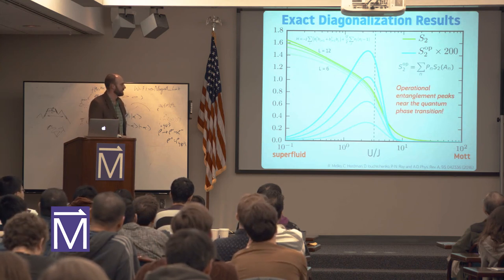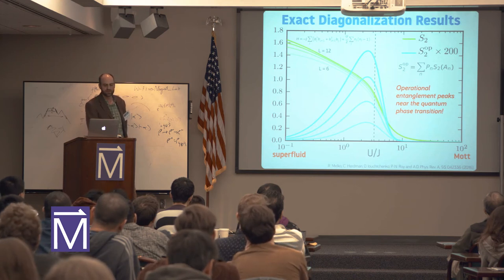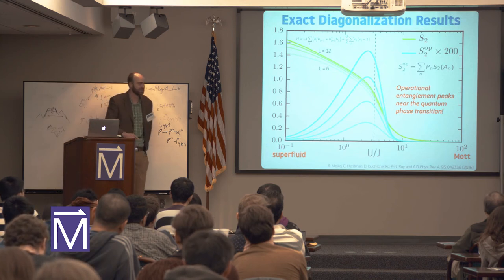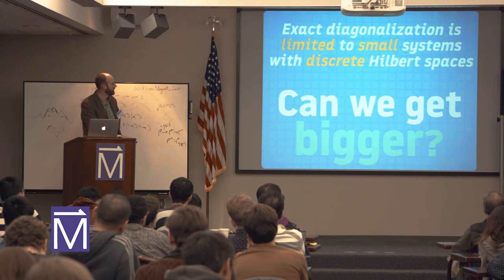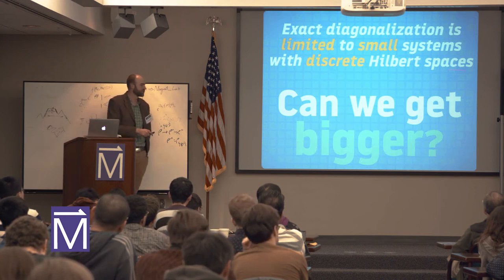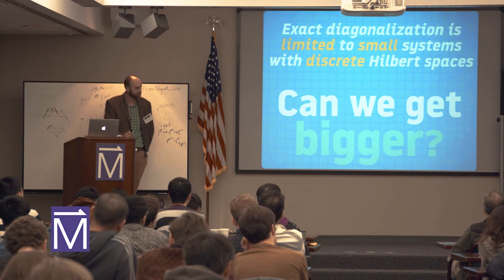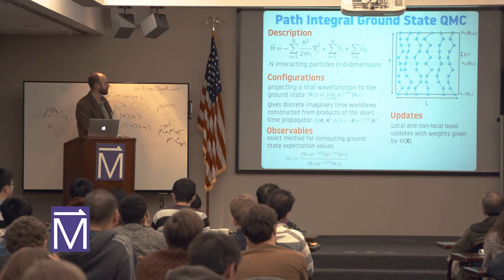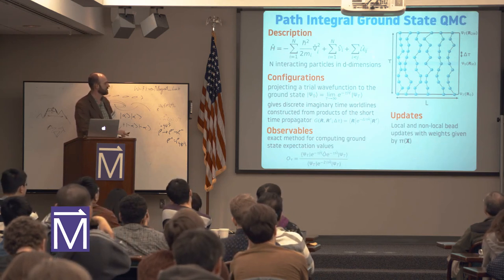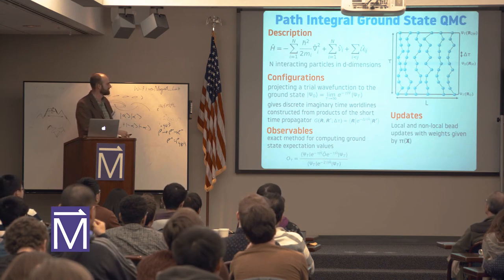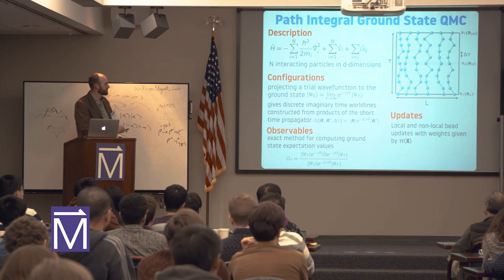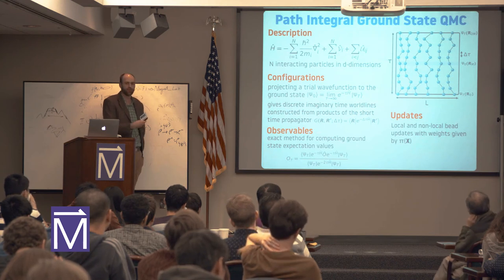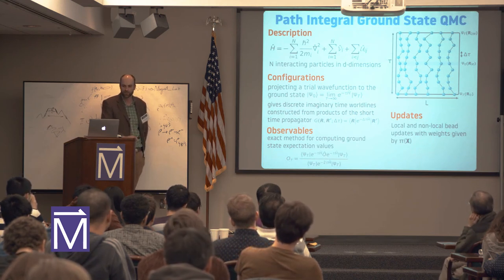What I'd really like to know is whether this peak is really scaling towards the transition, but to answer that I'd need systems bigger than L equals 12. With exact diagonalization, I can get to maybe L equals 16 or 20, but no further. I want to know if we can get bigger. We can do that with our path-integral ground state quantum Monte Carlo. So I won't re-read through all this — these are itinerant particles in the spatial continuum, with projected trial wave functions down to this central time slice where we have a good approximation to the ground state wave function.